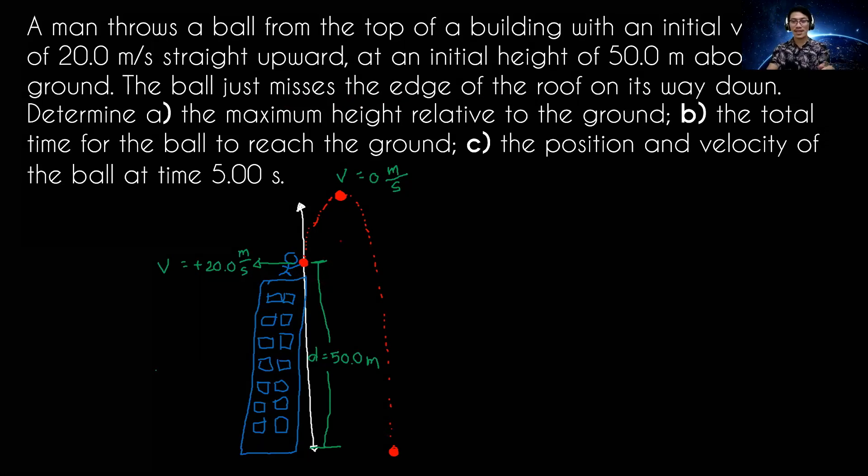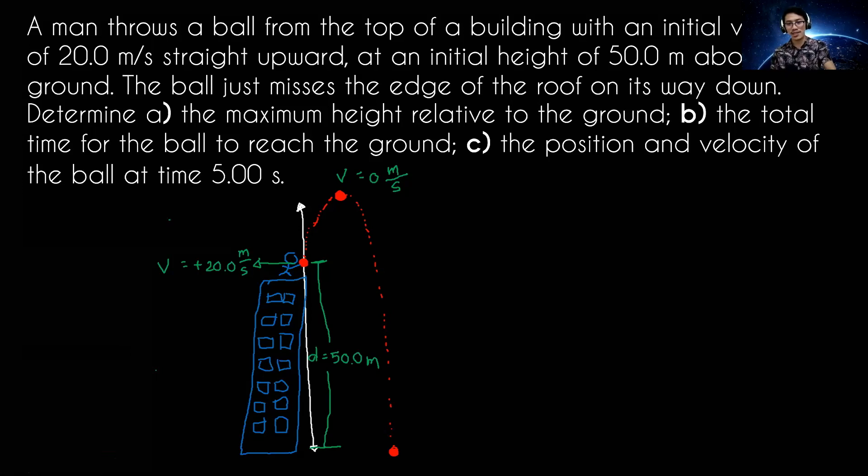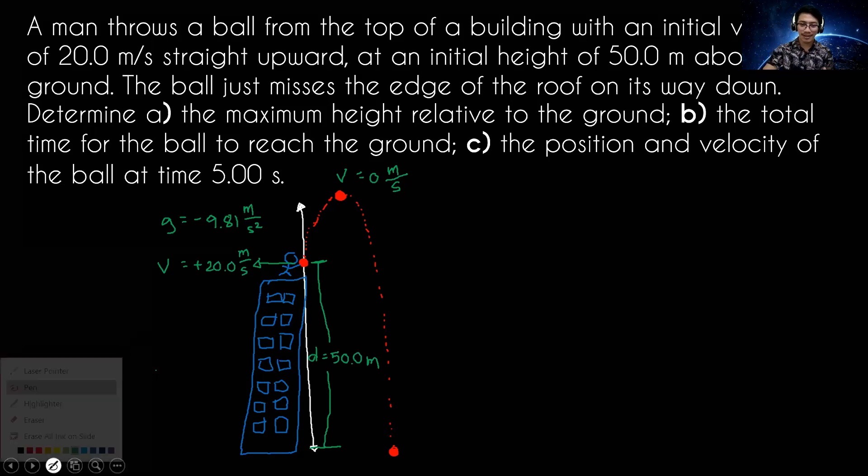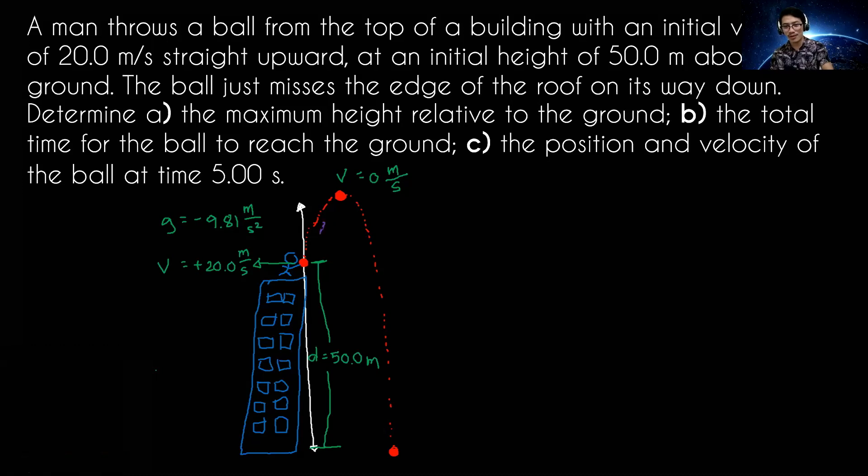Now take note, this is freefall motion. It means we all know that during freefall motion we have an acceleration which is equivalent to the acceleration due to gravity which is negative 9.81 meters per second squared. And take note in freefall motion we have two parts: the first part is the motion going upward, upward motion, and then the second part is the motion going downwards, downward motion, A and B.